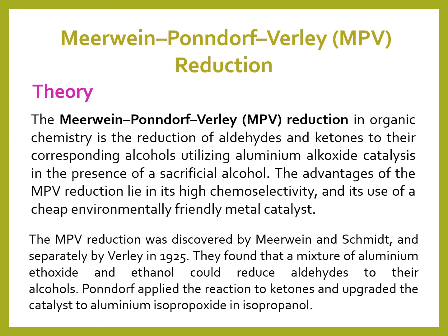This reaction is also known as MPV reduction reaction. The MPV reduction in organic chemistry is the reduction of aldehydes and ketones to their corresponding alcohols, utilizing aluminum alkoxide catalysts in the presence of a sacrificial alcohol. The advantages of the MPV reduction lie in its high chemoselectivity and its use of a cheap, environmentally friendly metal catalyst. The MPV reduction was discovered by Meerwein and Smith, and separately by Verley in 1925. They found that a mixture of aluminum ethoxide and ethanol could reduce aldehydes to their alcohols.